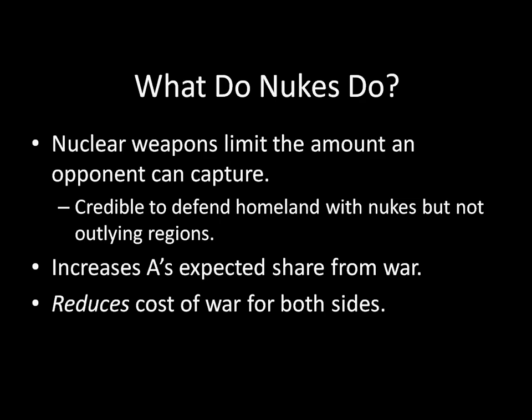So what do nuclear weapons do in this example? We're seeing nuclear weapons limiting the amount an opponent can capture, because it is credible to defend the homeland with nukes, but not the outlying regions. This is going to have two different effects on the cost-benefit analysis of war. First, this increases A's expected share from war, because nuclear weapons essentially provide an insurance policy — if things go very poorly in the war with conventional weapons, A still won't have its homeland lost. So this increases A's expected share and simultaneously decreases B's share. But more importantly, this reduces the costs of war for both sides. A is no longer worried about its homeland being destroyed, and B is no longer having to pay for that invasion of A's homeland — it's going to stop at the outlying regions.